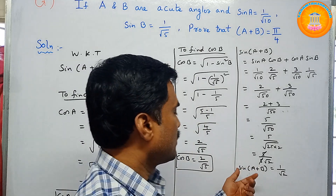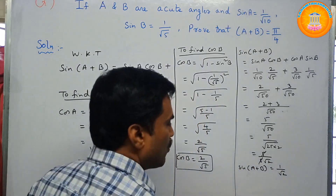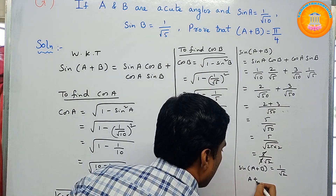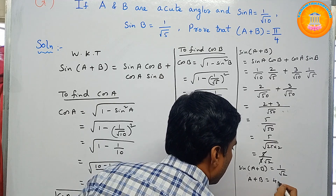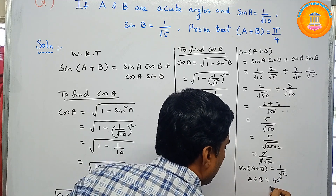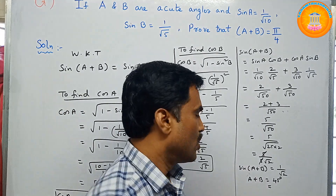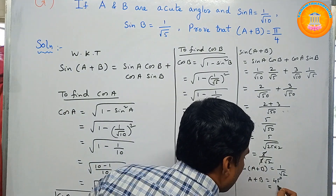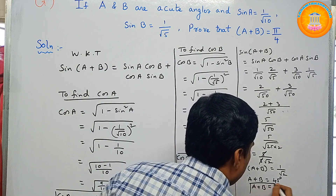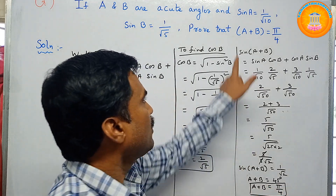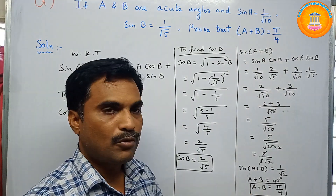Taking sin inverse of both sides: A + B = sin⁻¹(1/√2) = 45°. Since π = 180°, we have 45° = π/4. Therefore A + B = π/4, which is exactly what we needed to prove.